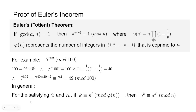In general, for any coprime a and n, if we want to evaluate a^k modulo n, we first calculate k modulo φ(n). If k ≡ k′ (mod φ(n)), then a^k ≡ a^(k′) (mod n). This is exactly what we did in the example.